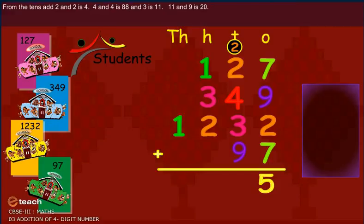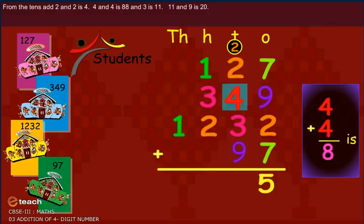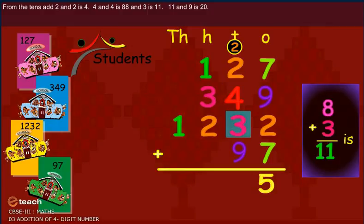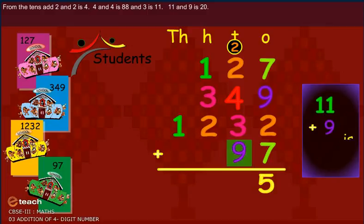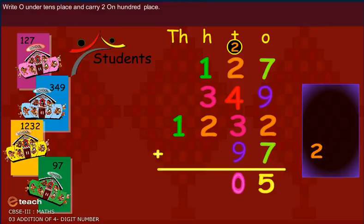From the tens, two and two is four. Four and four is eight. Eight and three is eleven. Eleven and nine is twenty.